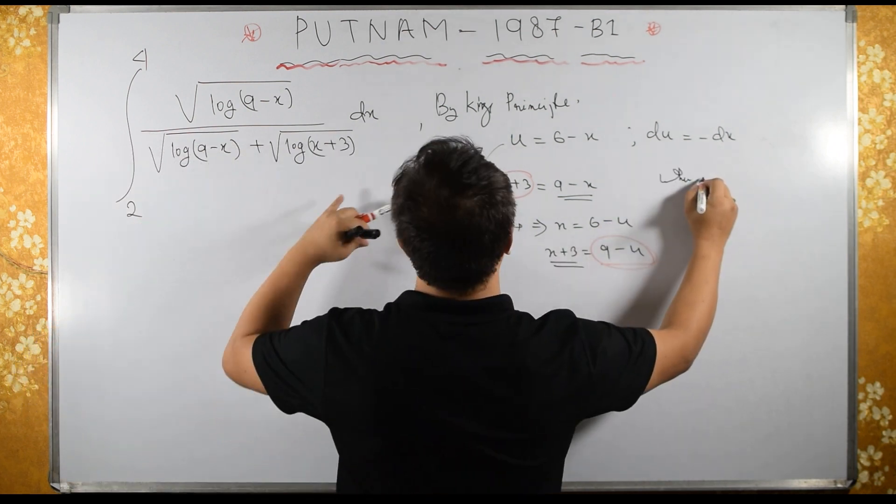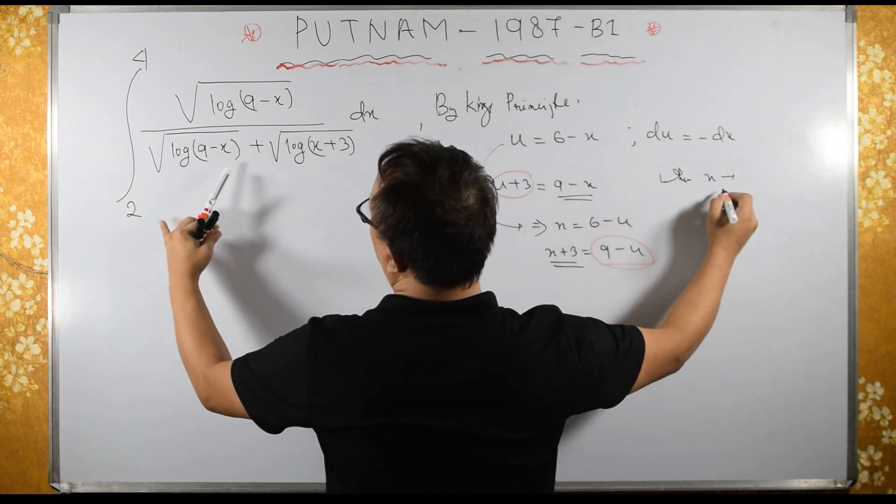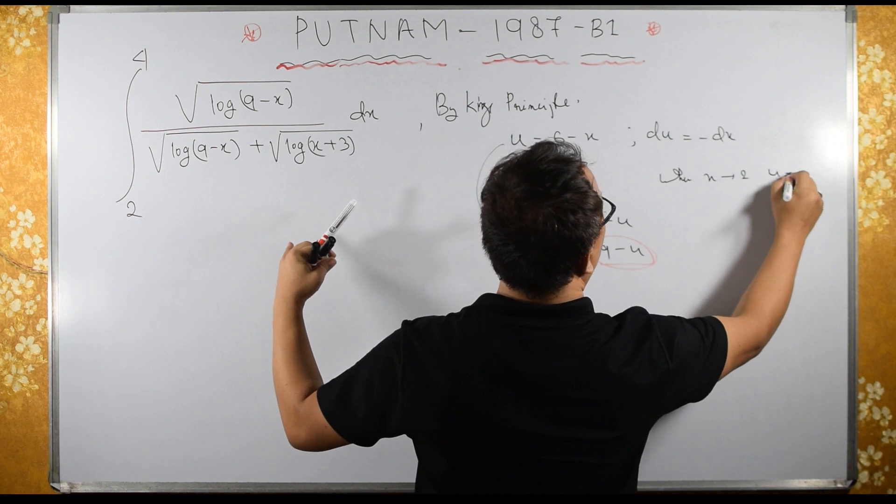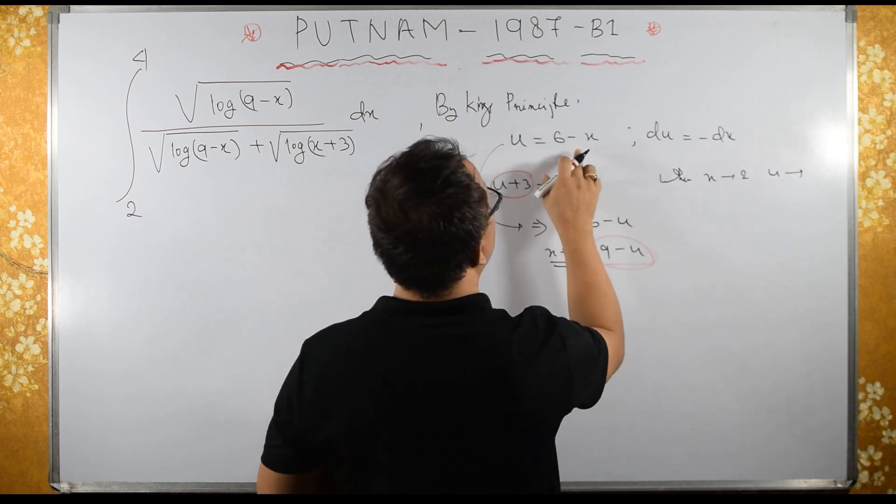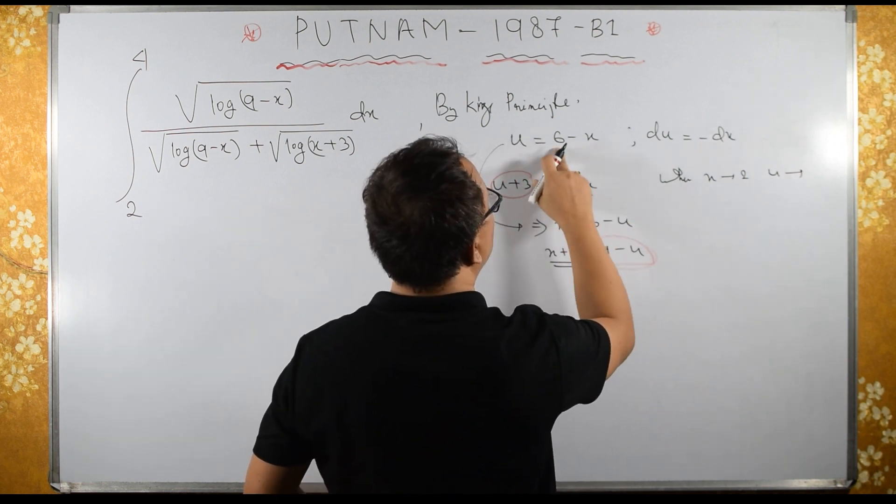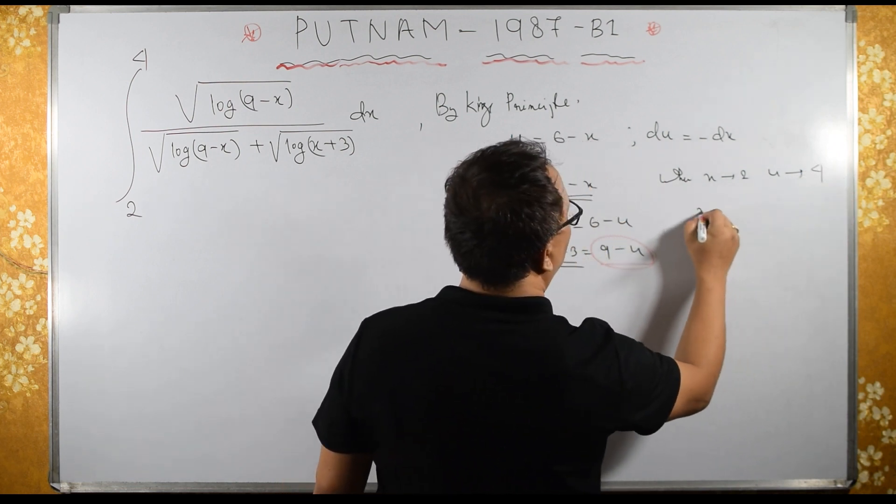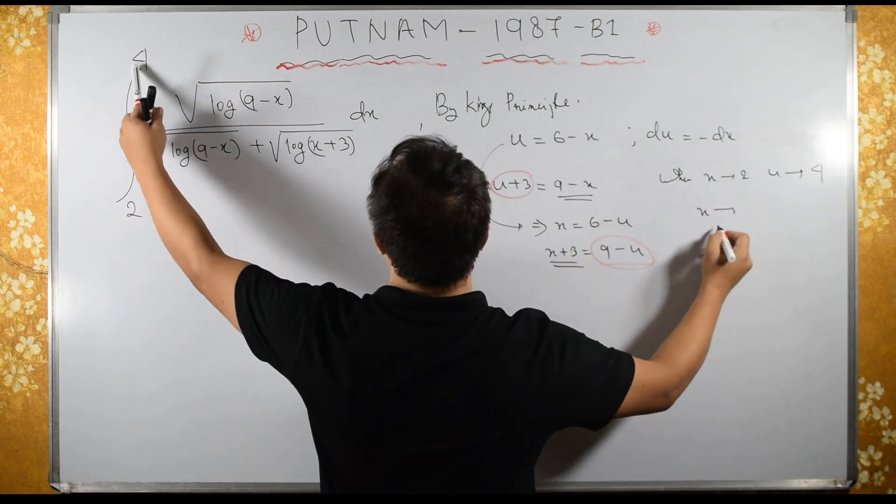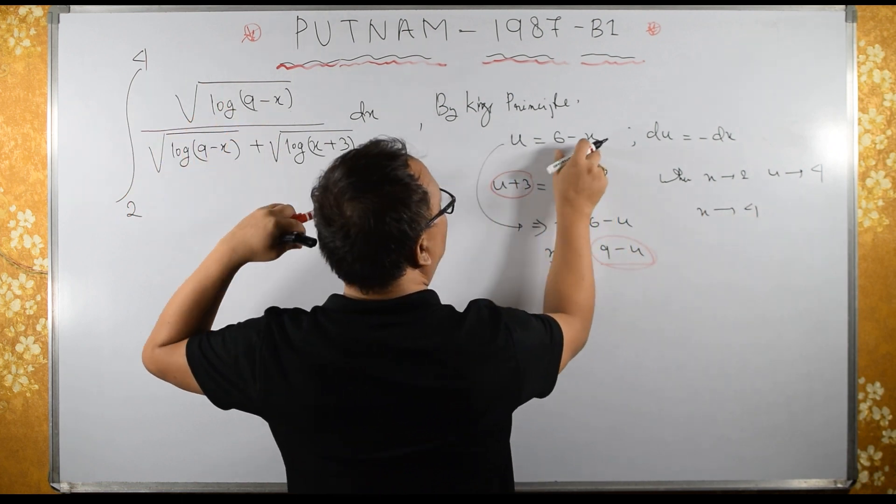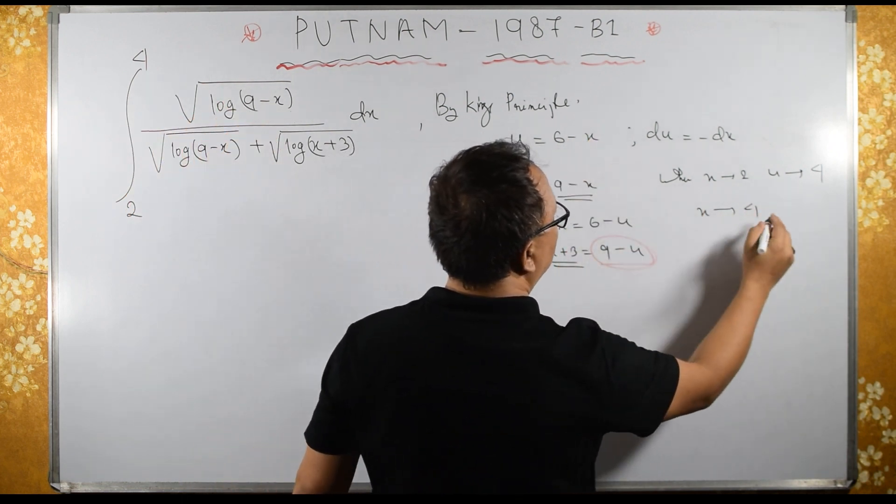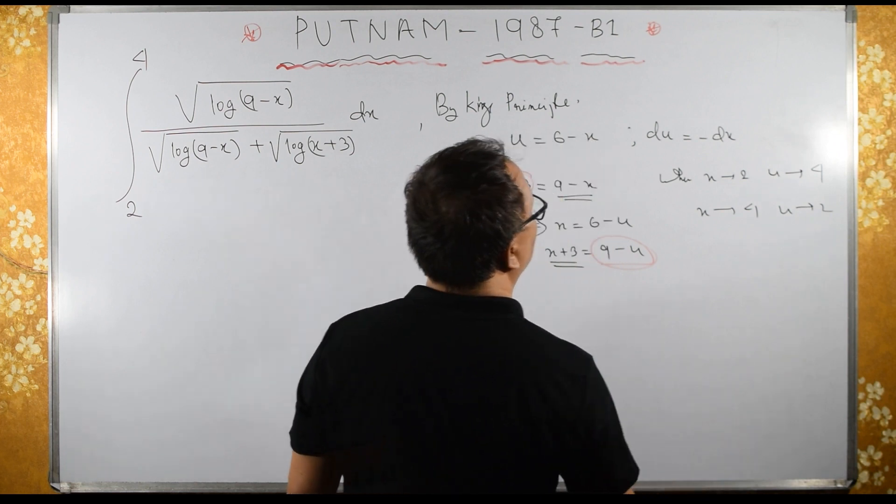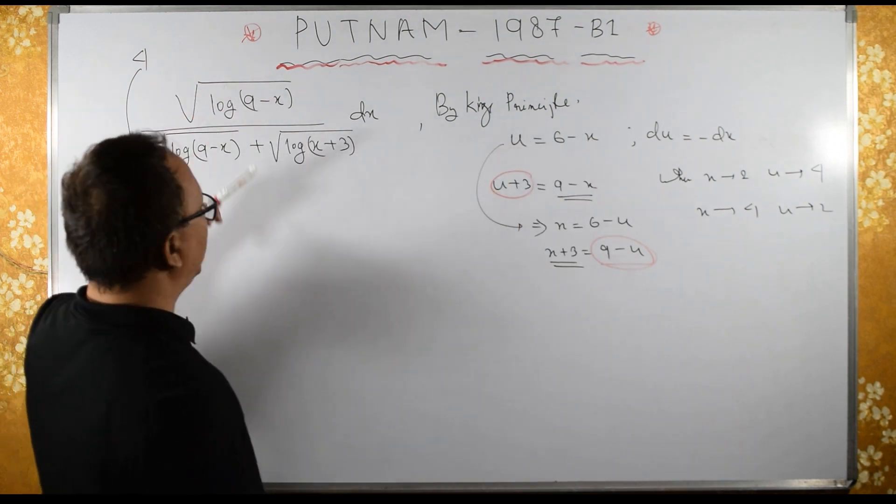Limits: when x tends to 2, u tends to what? When x tends to 2, u tends to 6 minus 2, which is 4. When x tends to 4, u tends to 6 minus 4, which is 2. So 2 to 4 becomes 4 to 2.